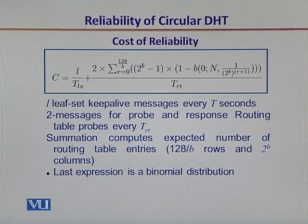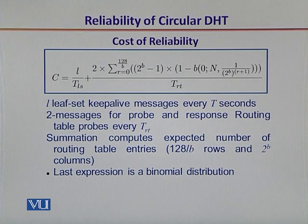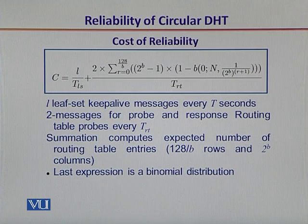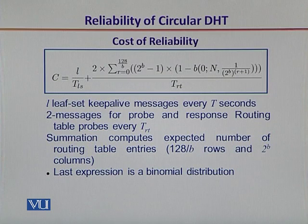For example, if there are L leaf-set keep-alive messages sent every t seconds, this gives the first expression on the right-hand side. If two messages are sent for probing and response every r*t seconds, then the second expression on the right-hand side appears. The summation determines the expected number of routing table entries, which is given by 128 divided by b. Here b is an integer which typically takes the value 4, so 128 divided by b determines the rows and 2 to the power b determines the columns.